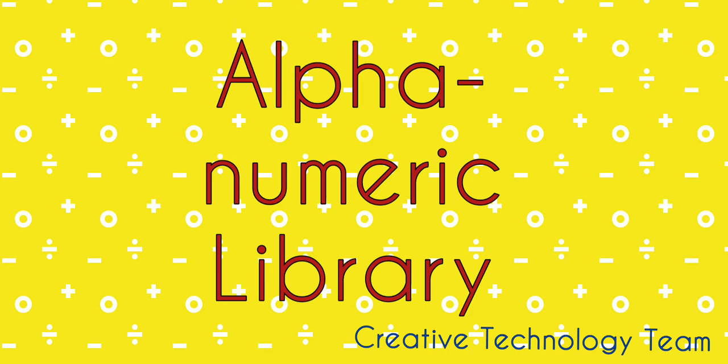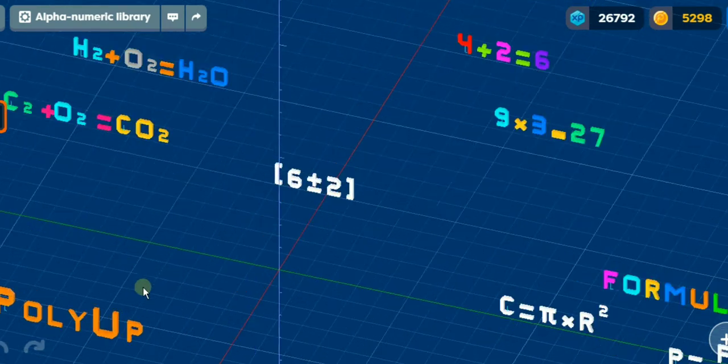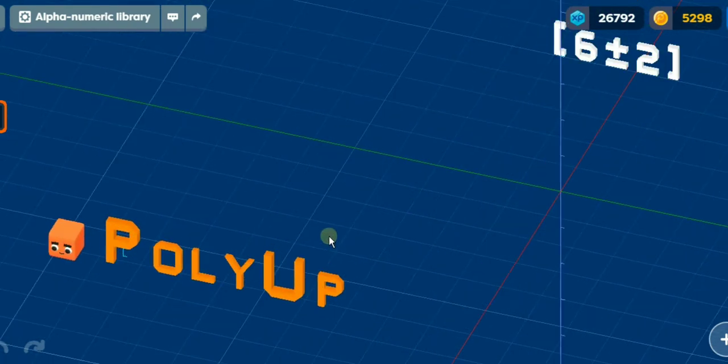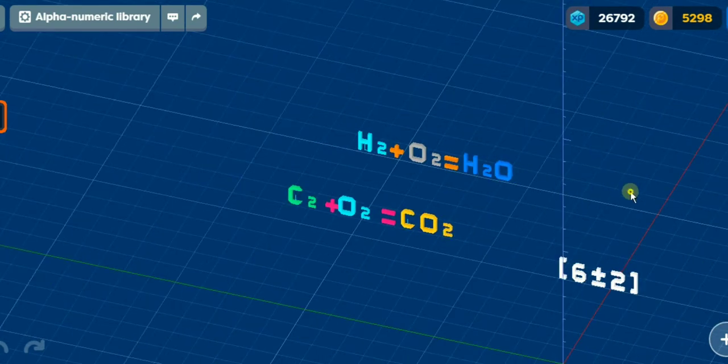Today I will introduce you to the alphanumeric library we have been working on for some time. Through this library, you can type different words, machine names, formulas, in short, everything you want on your machines in Polyapp.